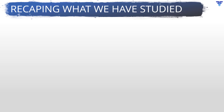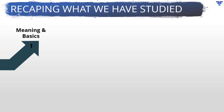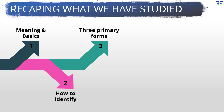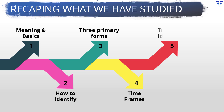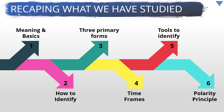Over the last few videos, we have covered several vital aspects relating to support and resistance. These include what support and resistance are, how to identify them, the three primary forms in which they appear, the timeframes on which they can be identified, the ways and tools that one can use to identify them, and finally the polarity principle. The only major thing that remains to be discussed are the ways in which one could analyze the significance of support and resistance penetration.